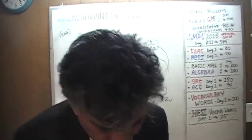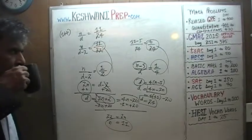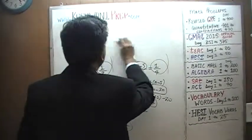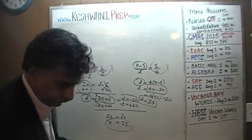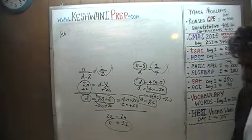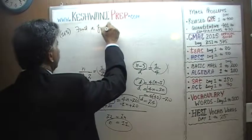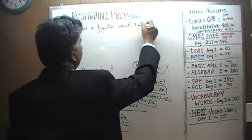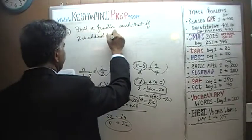Let's do one more, shall we? Another one, very similar, dealing with fractions. Number 165. Find a fraction such that if 2 is added to its numerator...